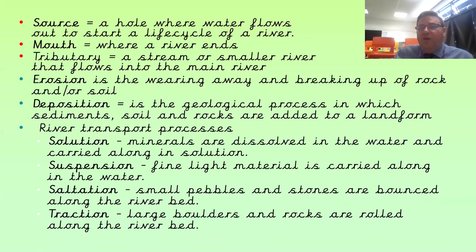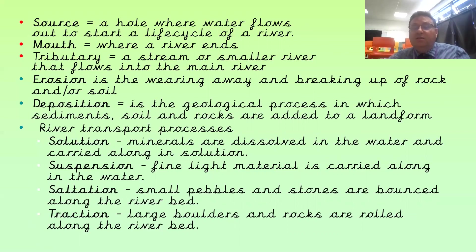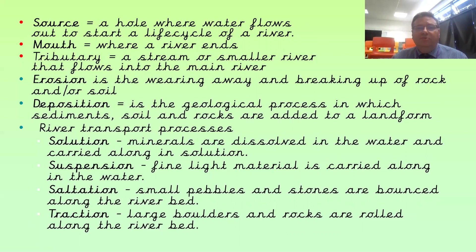We're also going to be looking at river flows and the water cycle as it impacts on the tropical rainforest, because there are different cycles working together there. The source of a river is the very start — where the river first begins to flow, where the water first bubbles out of the ground — and that's usually high up in the mountains.